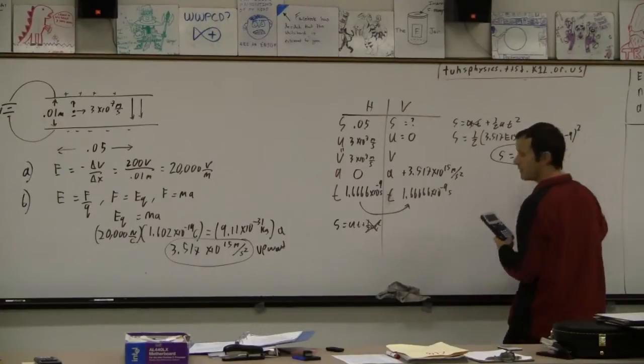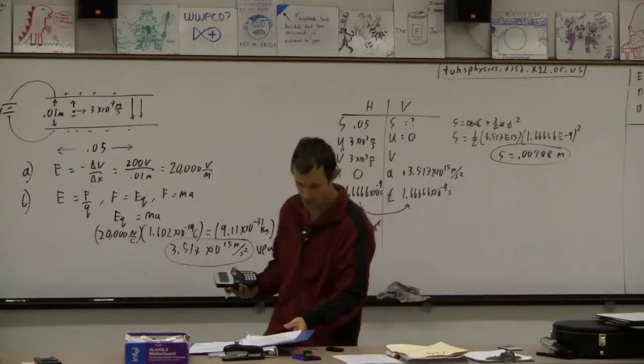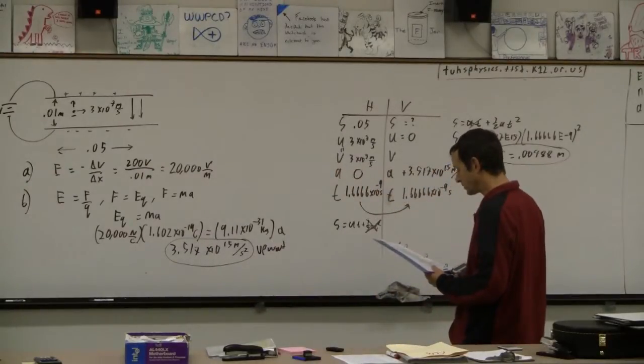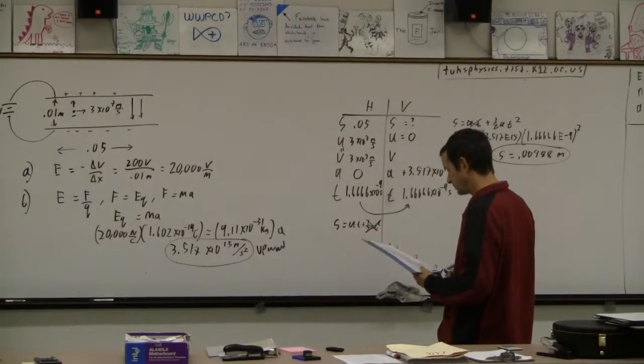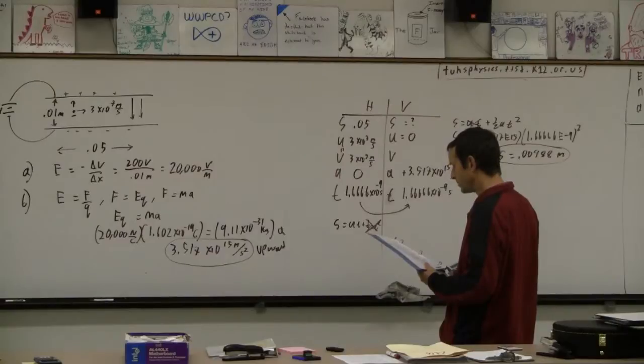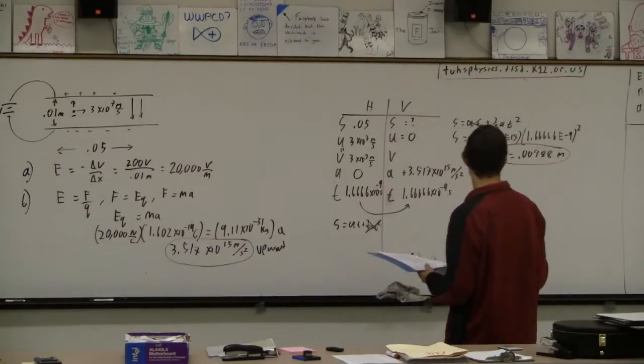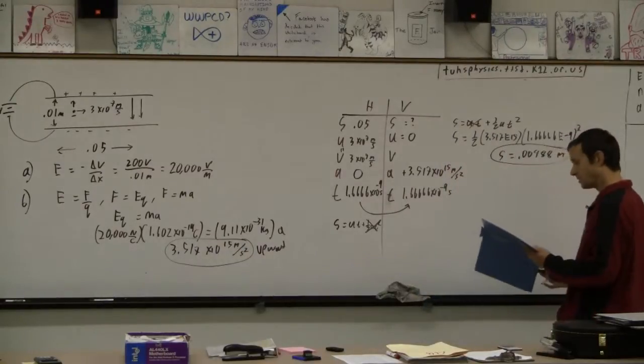And the answer that they give is determine the magnitude of the vertical displacement of the electron for the time interval during which it moves through the region between the plates. And so 4.9 times 10 to the minus 3rd meters, which, there we go.